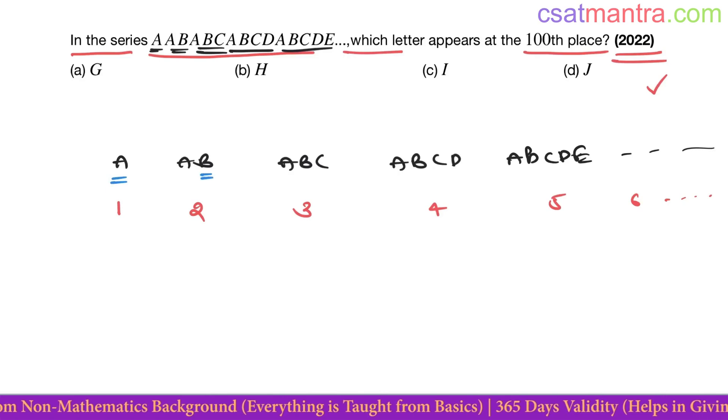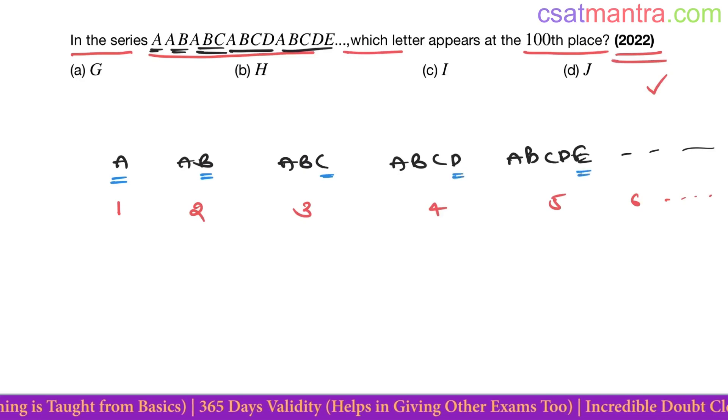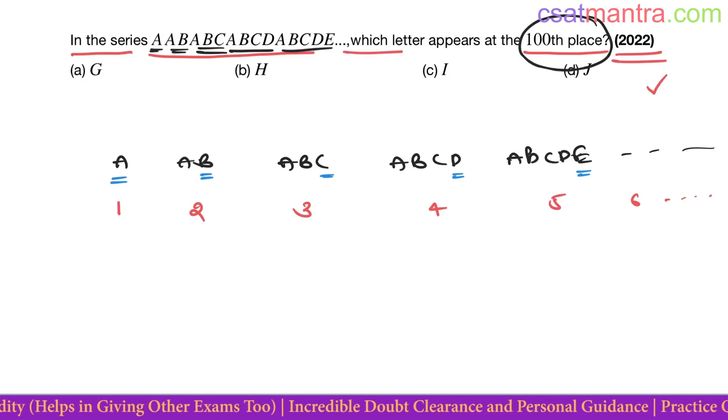B at third place, one plus two third. C one plus two plus three, sixth place. D tenth place. E fifteenth place. F twenty-first place. Which letter appears at the hundredth place? Let's see number of letters we have till thirteen.